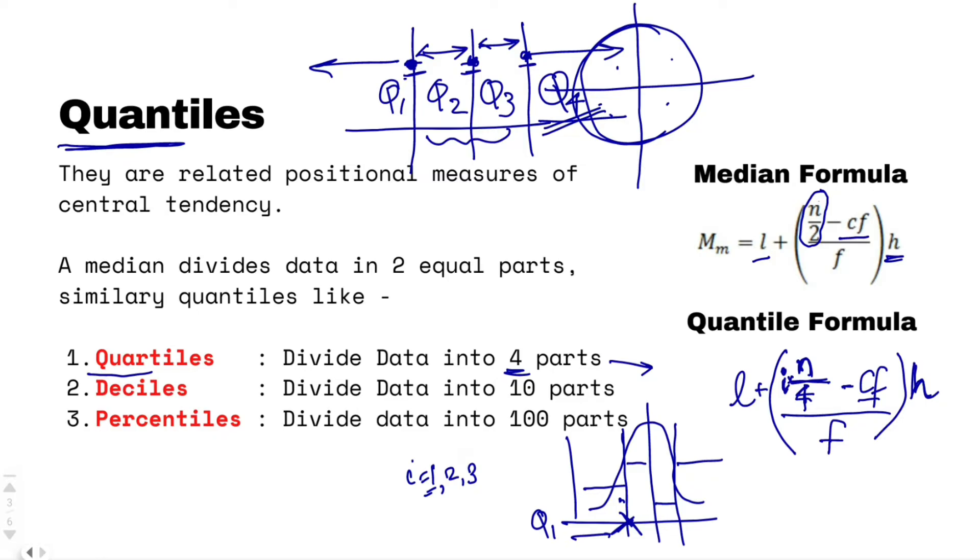Now, when we are talking about deciles, the entire data is divided into 10 parts. I will take a value from 1 to 9 so that we can properly divide into 10 parts. This same formula, only thing we have to do is, instead of dividing the entire data by 4, now I will divide the entire data by 10 and I will get the deciles. Now you will be able to easily identify the formula for percentile. The entire data will be divided by 100. If you can remember the medians formula, you can easily remember the quantile formula as well. It is not much different.